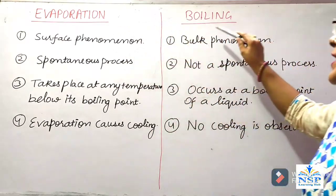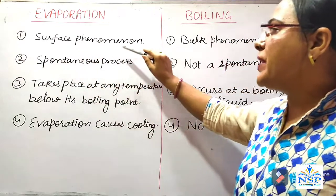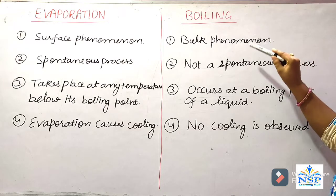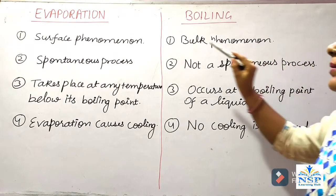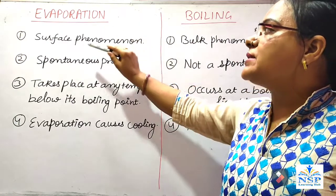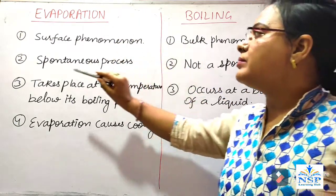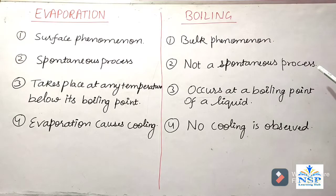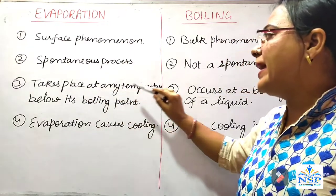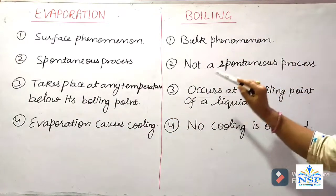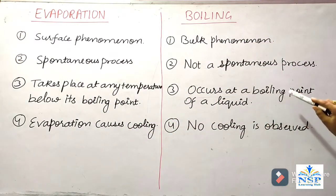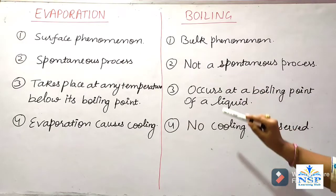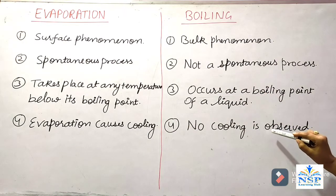Nature of liquids: lesser the boiling point of a liquid, more its tendency to change into vapors. Difference between evaporation and boiling: evaporation is a surface phenomenon whereas boiling is a bulk phenomenon — boiling occurs in all particles of the liquid, but evaporation occurs only at the surface molecules. Evaporation is a spontaneous process but boiling is not. Evaporation takes place at any temperature below its boiling point, but boiling occurs at the boiling point of the liquid. Evaporation causes cooling, but there is no cooling observed in boiling.